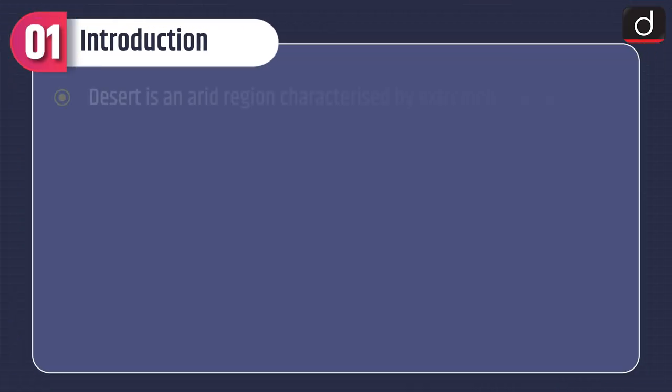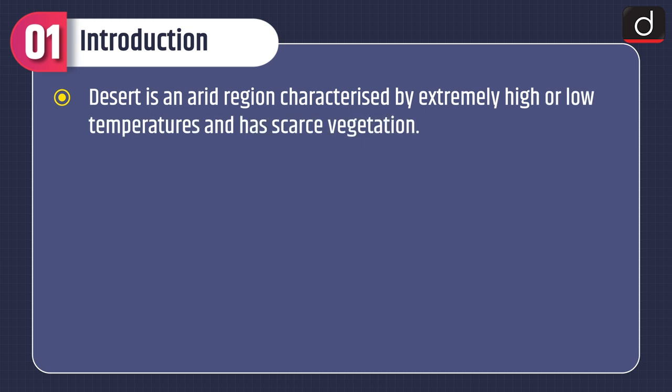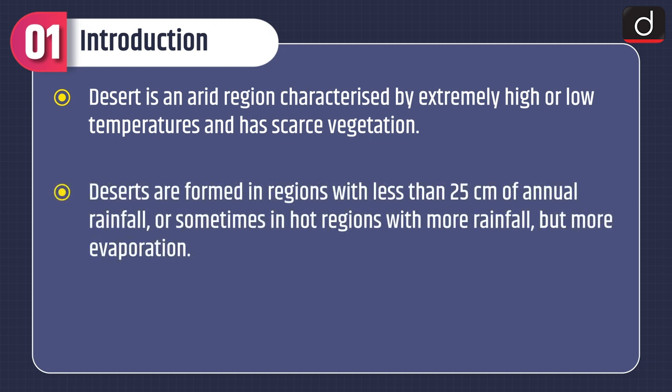Moving on to the introduction of the topic. Desert is an arid region characterized by extremely high or low temperatures and has scarce vegetation. Deserts are formed in regions with less than 25 cm of annual rainfall, or sometimes in hot regions with more rainfall but more evaporation.